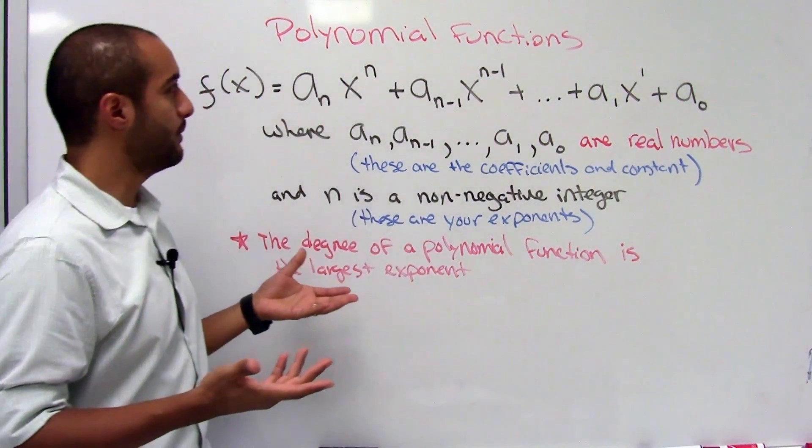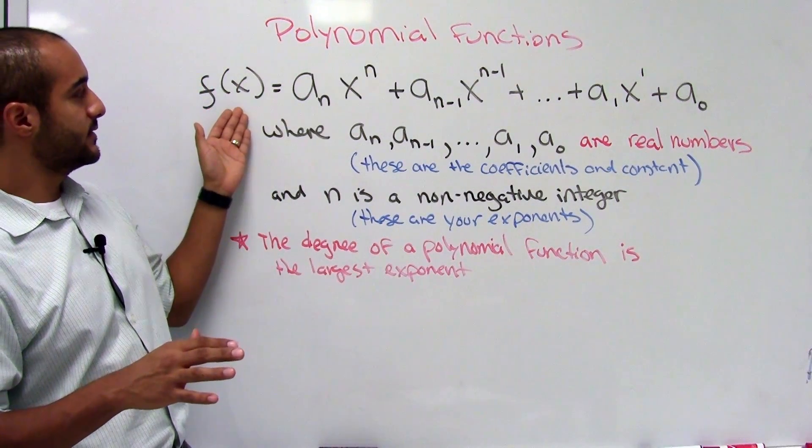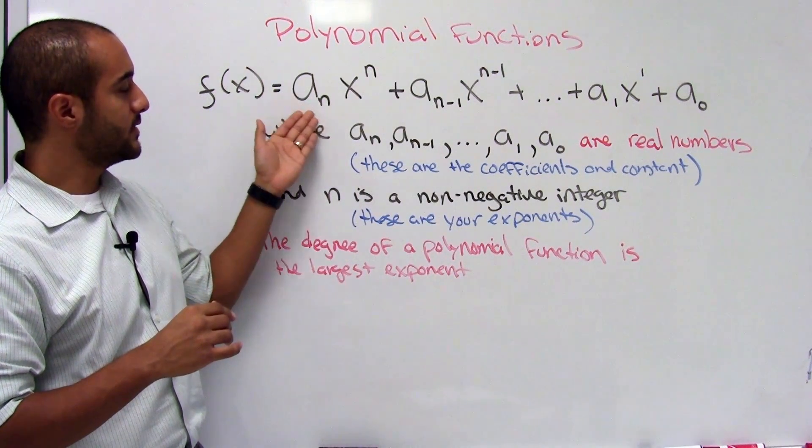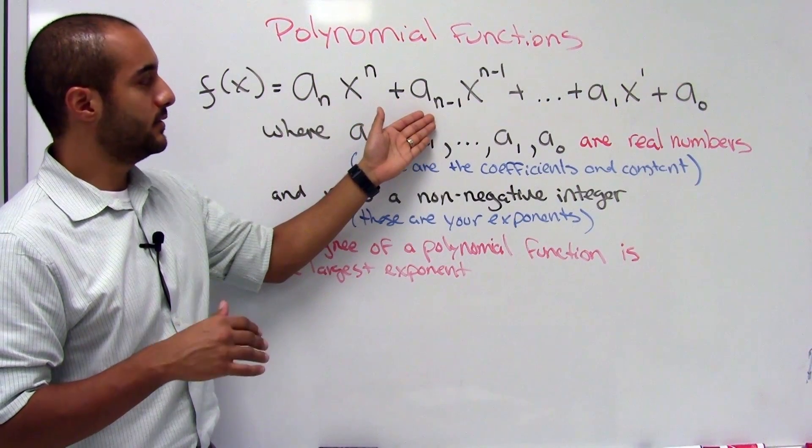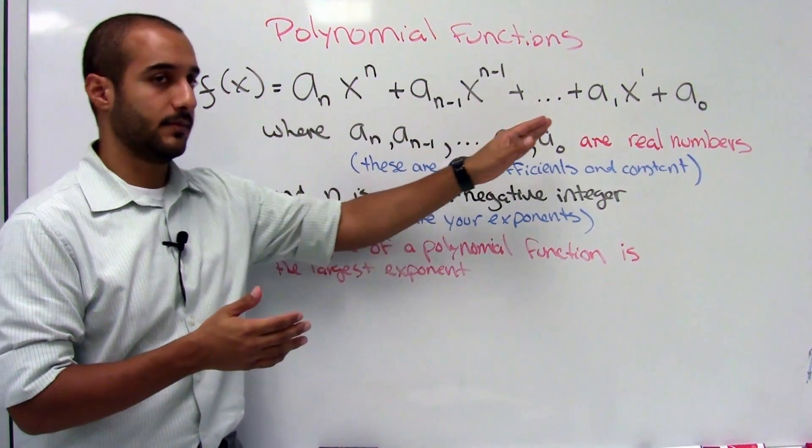Alright, so let's look at what a polynomial function actually is. Here we're given that f of x, which means a function, is equal to a sub n, x to the n, plus a n minus 1, x to the n minus 1, blah blah blah.